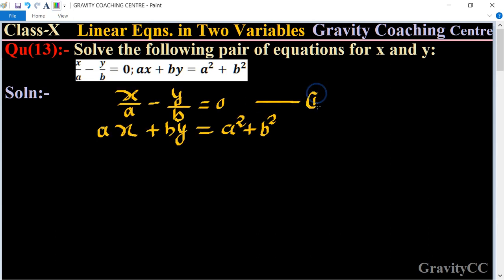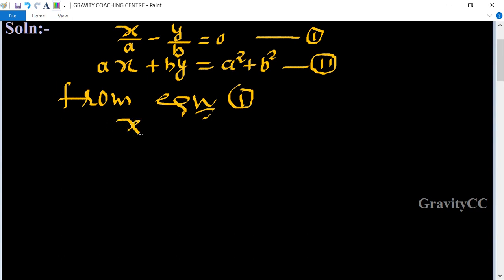From equation first, we get x/a - y/b = 0. The LCM of a and b is ab.